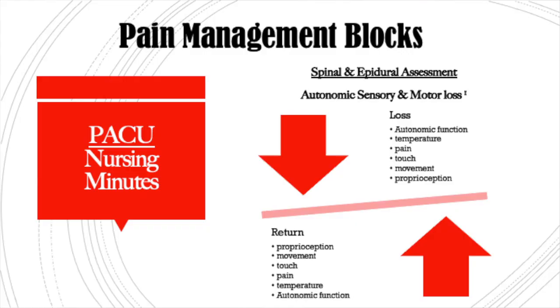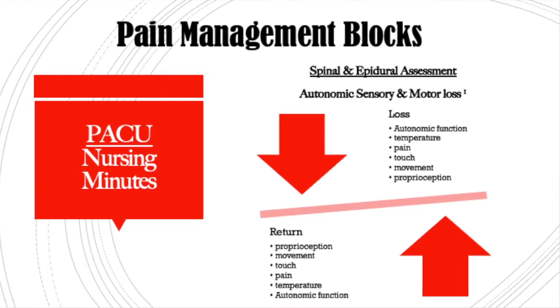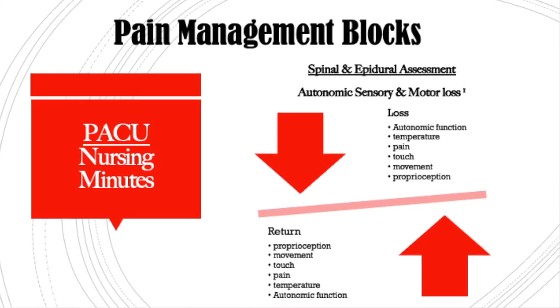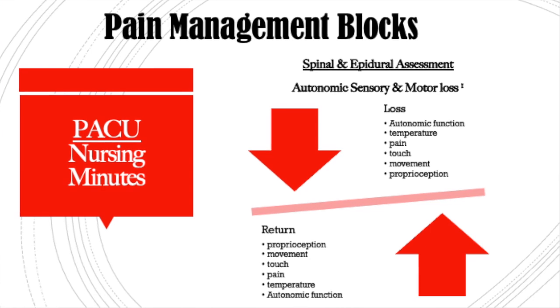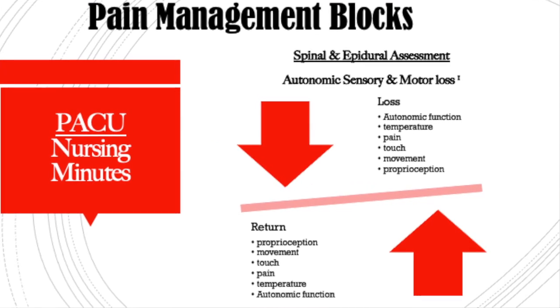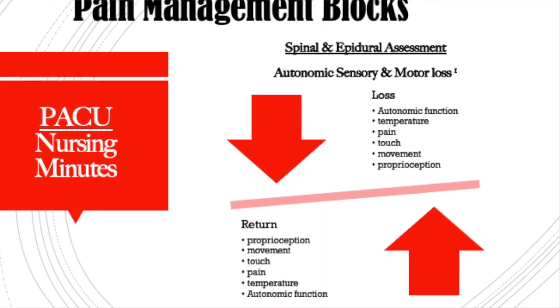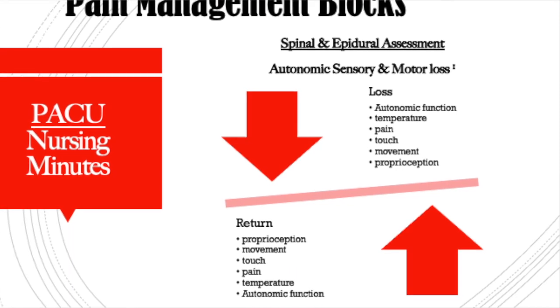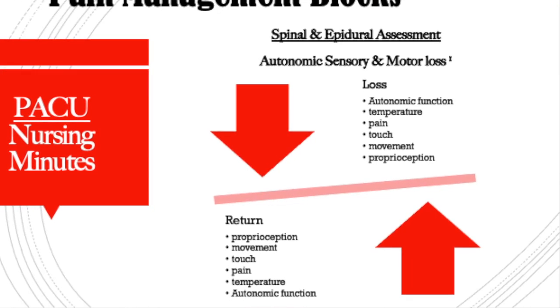Here is a grid showing the loss of autonomic response, sensation, and movement. We first see autonomic loss — vasodilation, inability to vasoconstrict, and impaired temperature regulation. The ability to sense hot and cold is next, then pain as the nociceptors are saturated, then touch, then movement, and then proprioception — the awareness of where your body is, such as knowing if your legs are crossed.